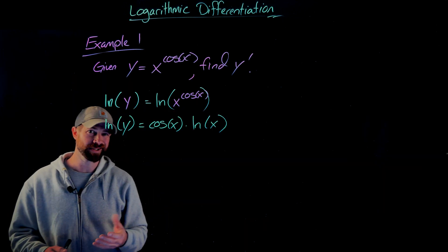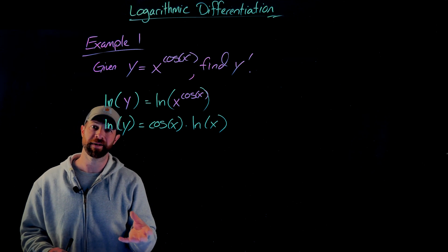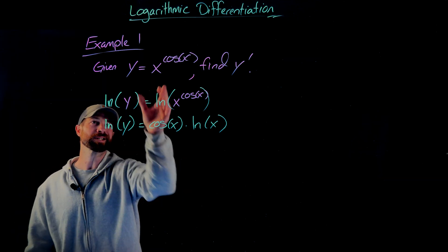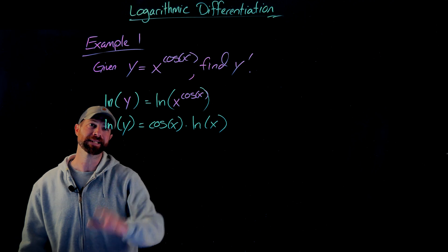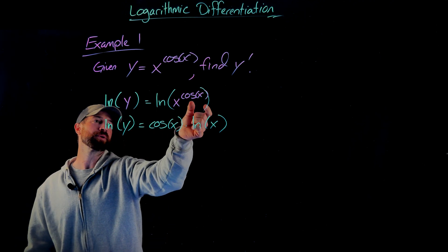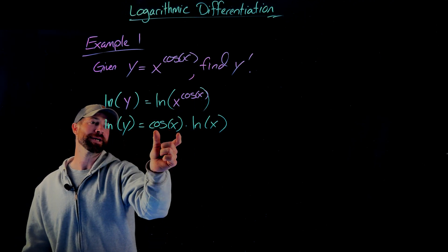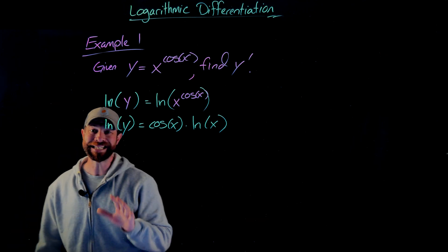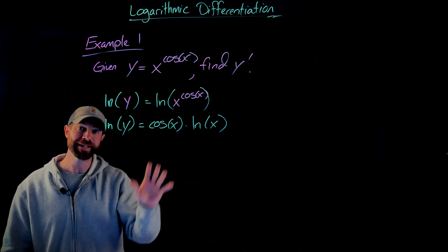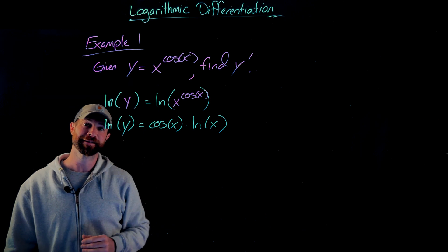That right there, honestly, is pretty much the trickiest part of the logarithmic differentiation. Again, all I'm doing is applying the natural log to both sides of this equation, and I'm using the property here that I can bring that exponent down and put it out front. The reason I am doing that is now each of these factors or all these terms, I have rules to differentiate.